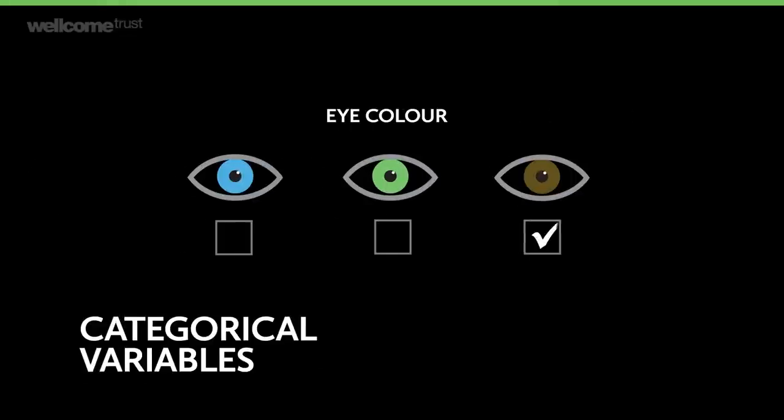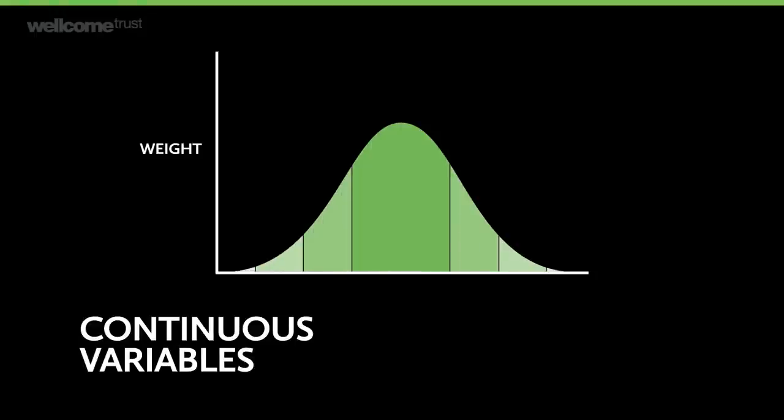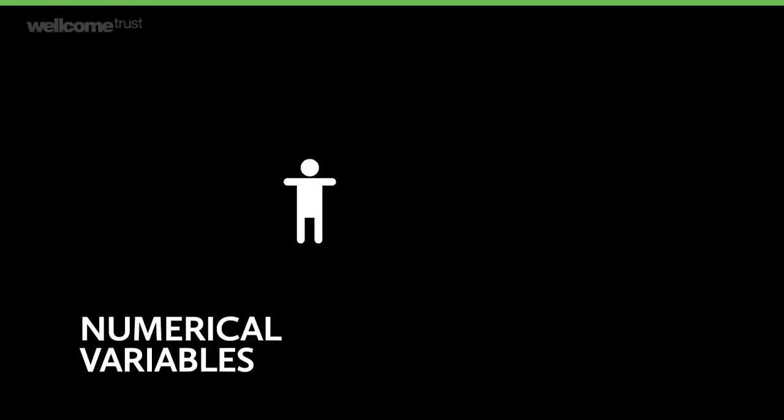Both sex and fingerprint type are categorical variables — you place things in categories, like your eye colour or where you were born. Things like height and weight are continuous variables, things that you measure. Numerical variables, such as the number of siblings you have, are somewhere in between — sometimes they can work like categorical variables, and sometimes like continuous variables.